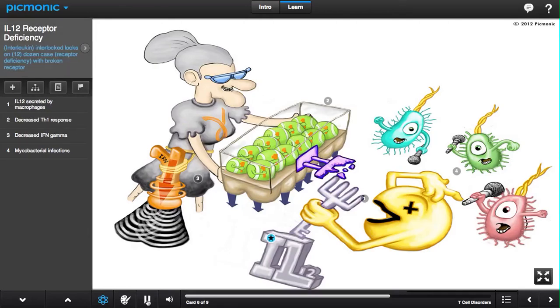IL-12 receptor deficiency, Interleukin-12 receptor deficiency, commonly called IL-12 receptor deficiency, is a congenital immunodeficiency depicted here by a broken receptor on the dozen egg carton to the interlocked IL-12 key.